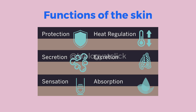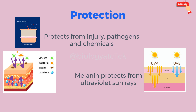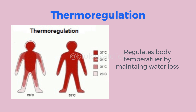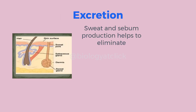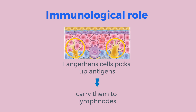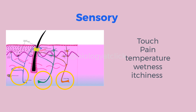Let's move on to the physiology or functions of the skin. The first function is protection. Skin protects the body from injury, heat, radiation, chemicals, and microorganisms. Melanin produced by melanocytes in the basal layer protects the body from ultraviolet radiation. The skin also serves as a temperature regulator, enabling the body to adapt to different temperatures by regulating moisture loss. An active form of vitamin D is synthesized in the skin in the presence of sunlight. Through the secretion of sweat and sebum, the skin performs an excretory function, eliminating harmful substances from metabolic activities of the intestine and liver. The skin plays an immunological role too, as Langerhans cells pick up antigens from the skin and carry them to the lymph nodes. Last but not least, the skin has an intricate network of fine nerve terminals that carry the sensation of touch, pain, temperature, wetness, and itchiness.